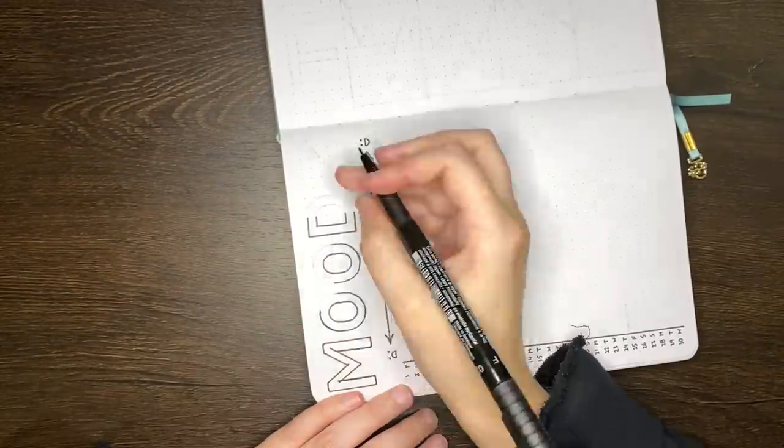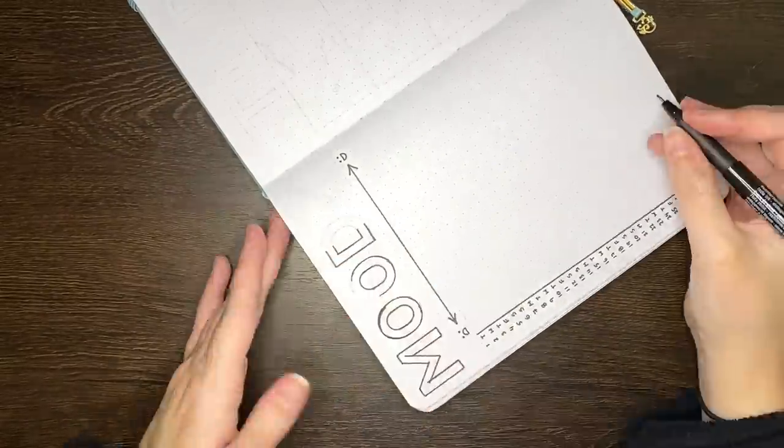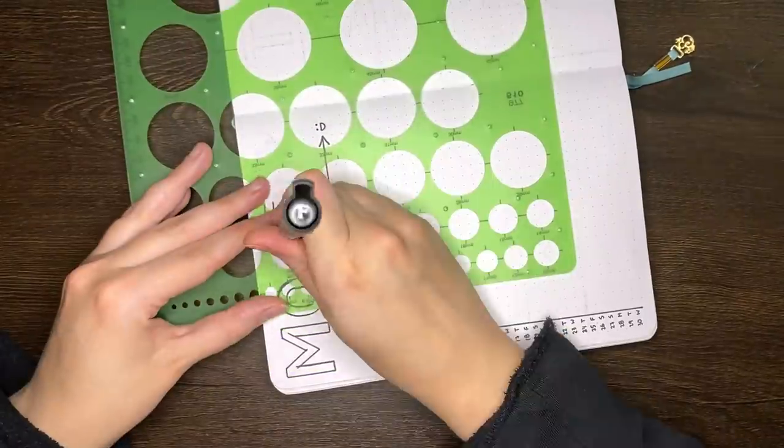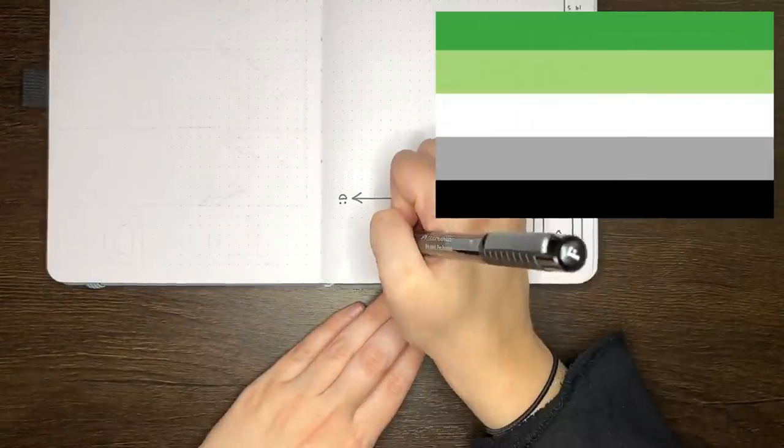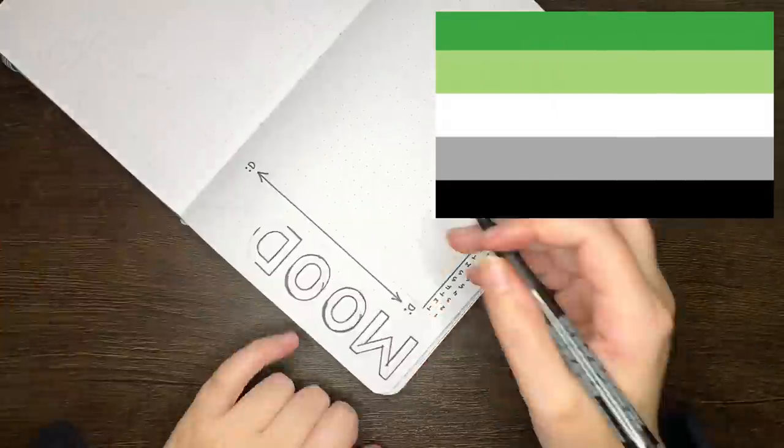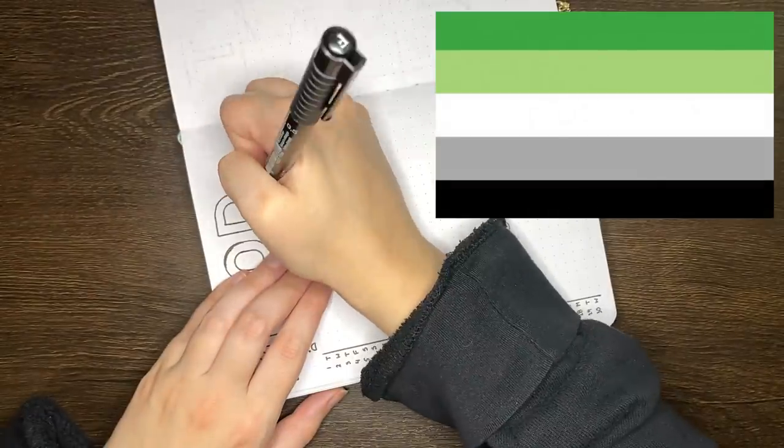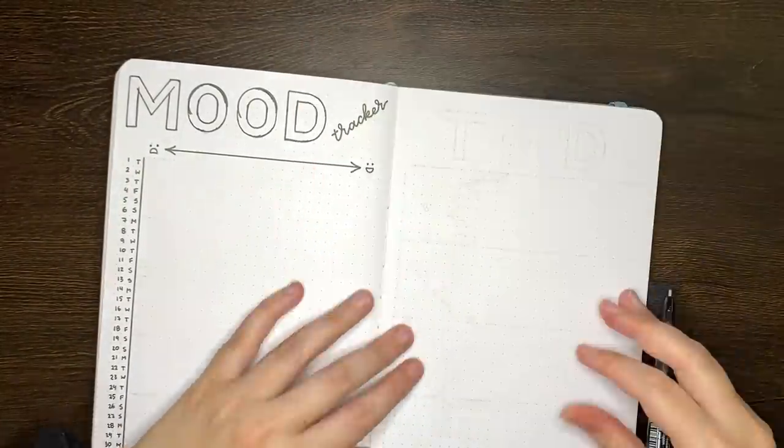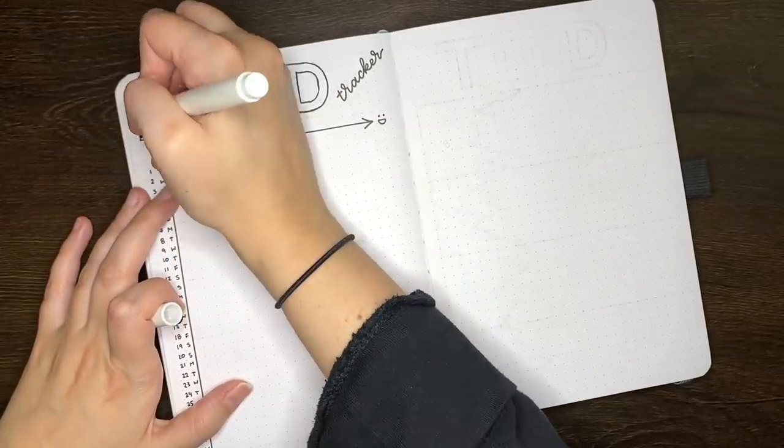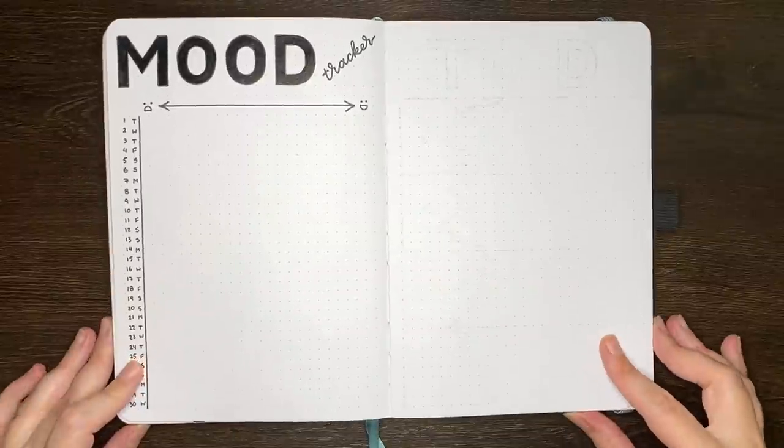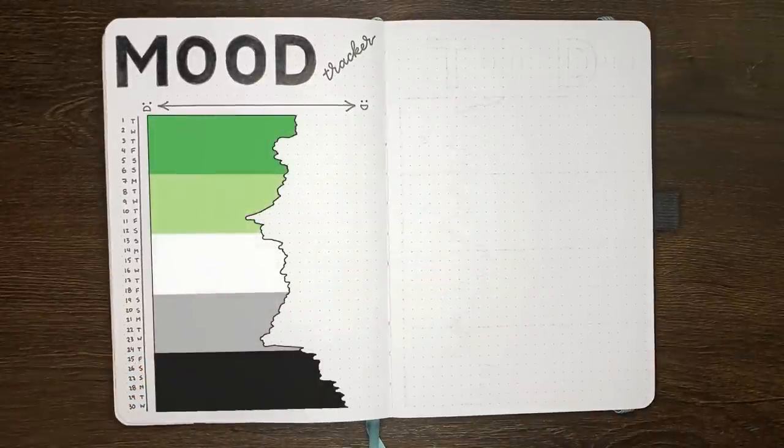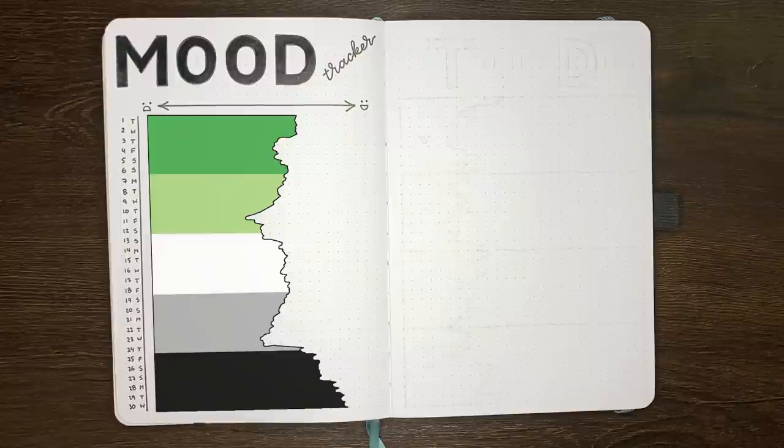What I've instead opted in for is a bar graph style mood tracker. So the longer the bar for each day, the better my mood. The bars are going to be sectioned off and assigned colours, so that come the end of the month, it shows the aromantic pride flag. This one has five coloured stripes, so I'm going to be having six days of the month assigned to each of those colours. So June 1 through 6 in the darker green, 7 to 12 in the lighter green, etc. I've got an overlay here to show you kind of what I mean. So this is similar to what it will end up looking like come the end of the month.